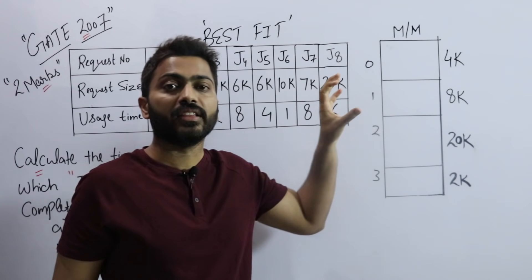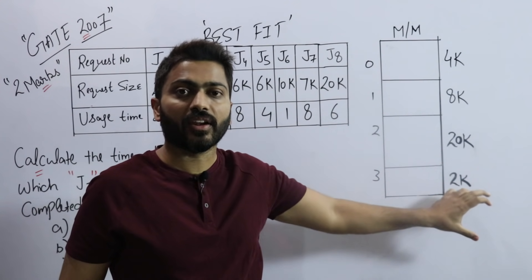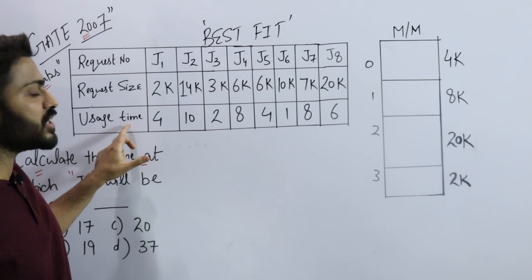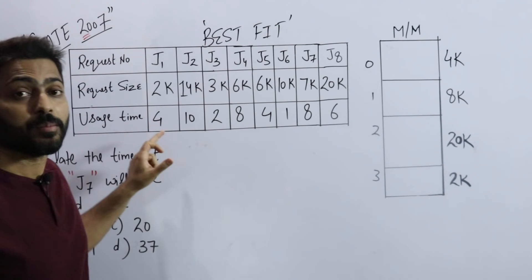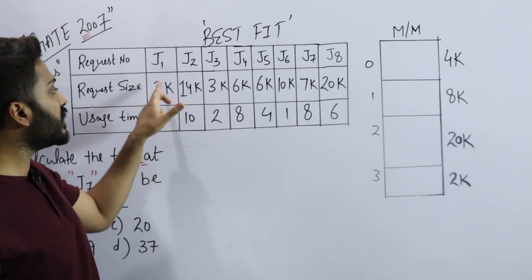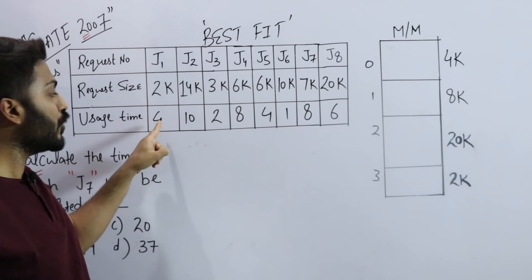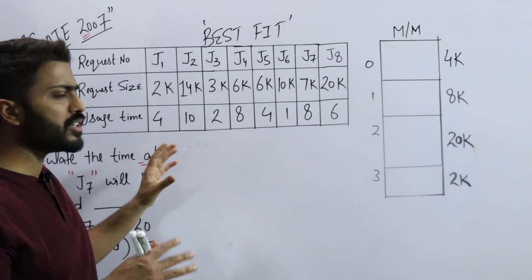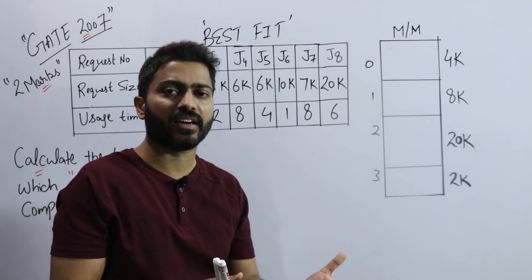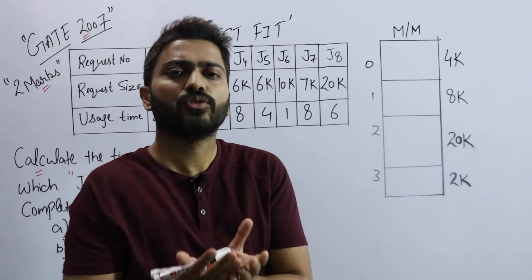The request size means how much memory they need in the RAM. One more thing is given: usage time, which means how long they will occupy the memory. For example, J1 is taking 2k space in the RAM, but for how much time?